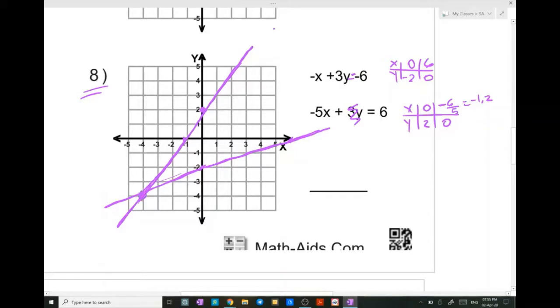And they meet at the point minus 4, minus 4. So minus 4, minus 4 are the coordinates of the point of intersection of these two lines.